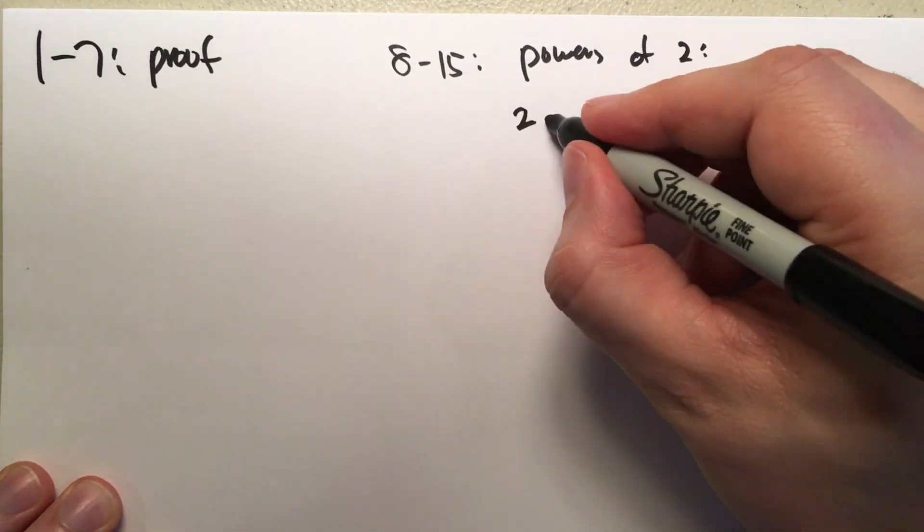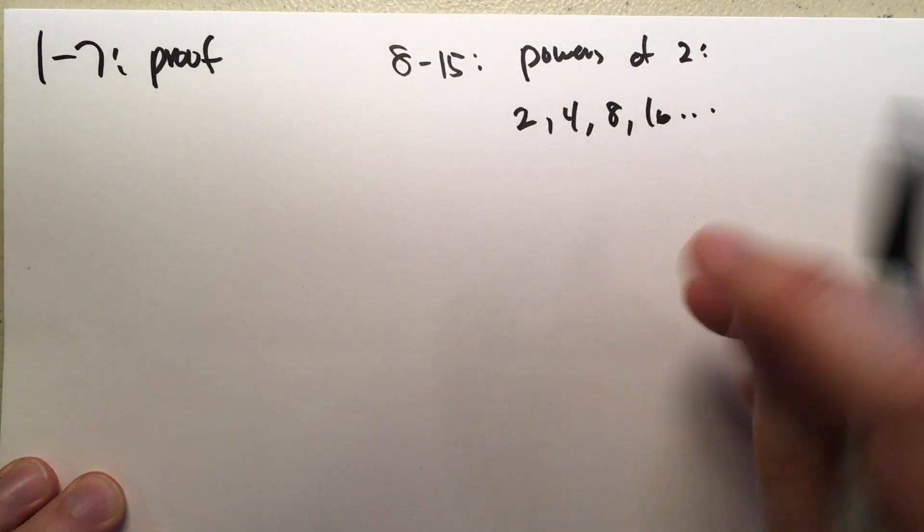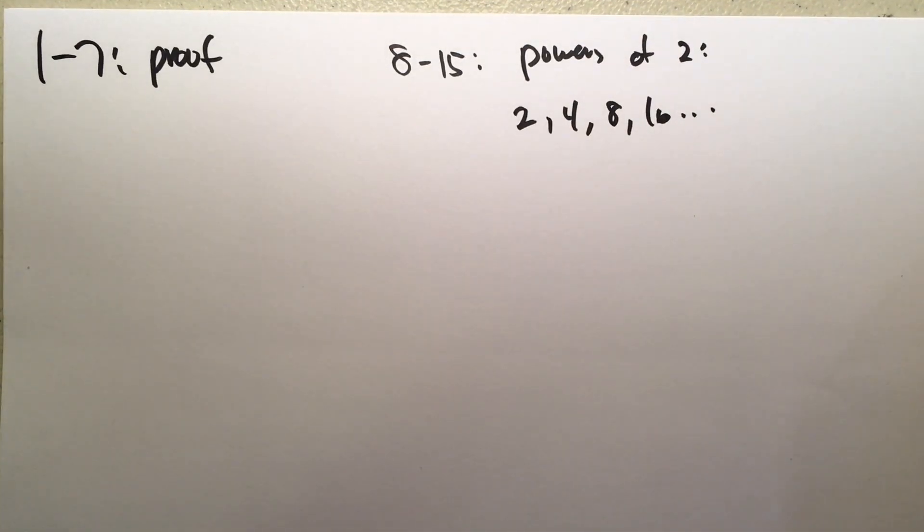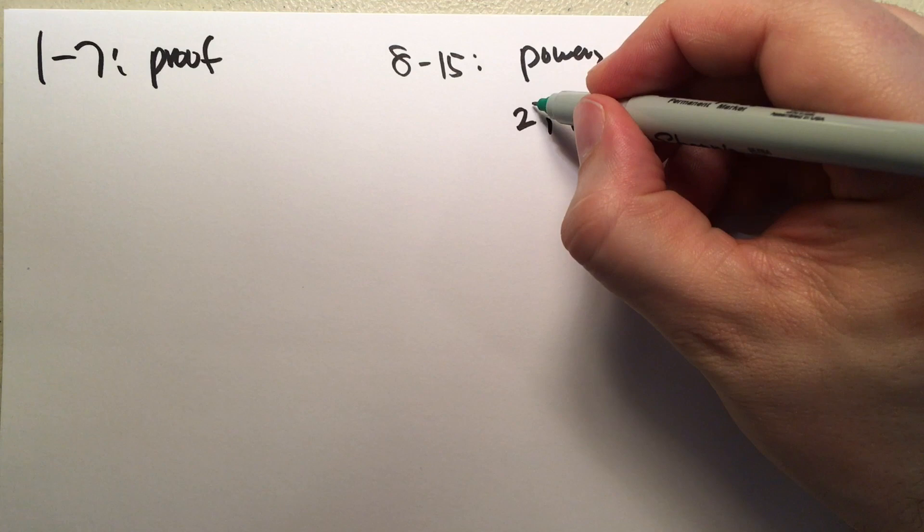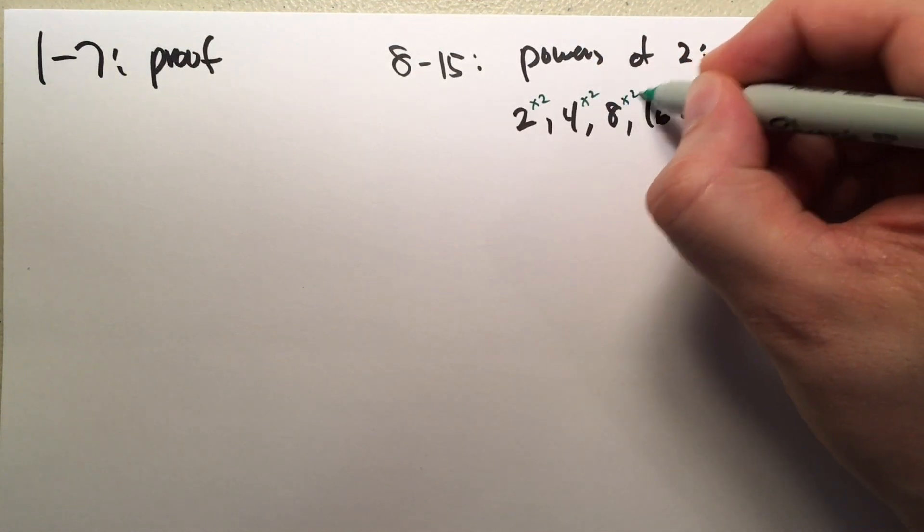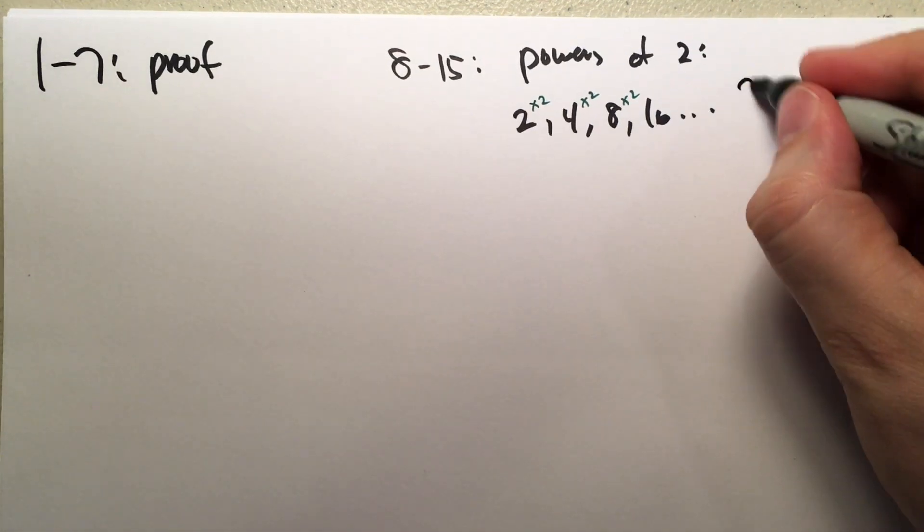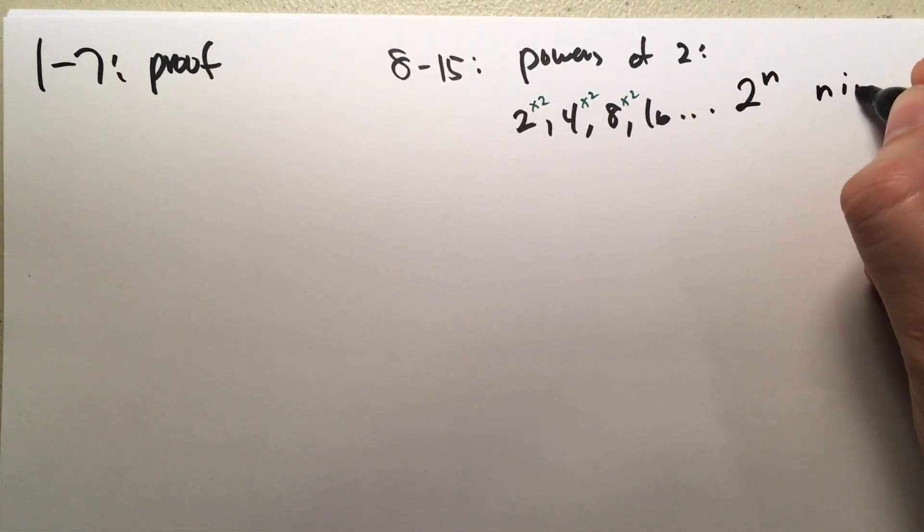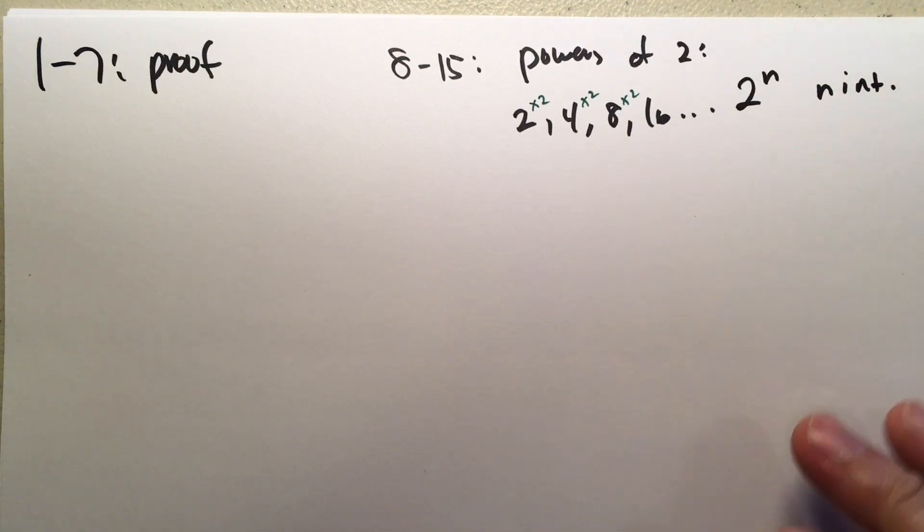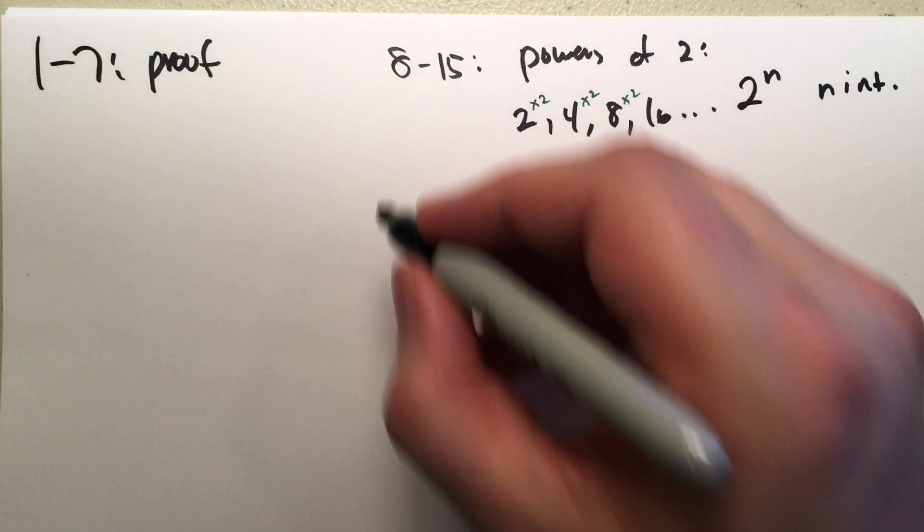Powers of two are numbers such as two, four, eight, sixteen, etc. Each time you're going up, you're multiplying by two. So, you're going times two, four times two is eight, eight times two is sixteen. Powers of two are basically two to the n where n is an integer. That's what powers of two mean.